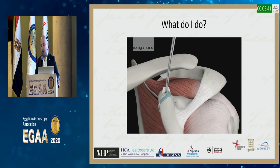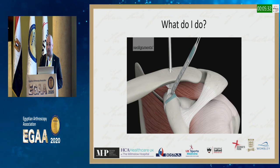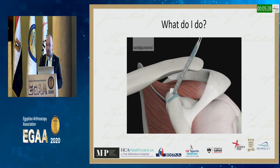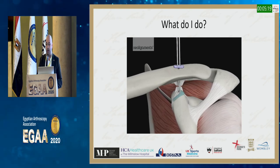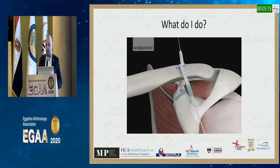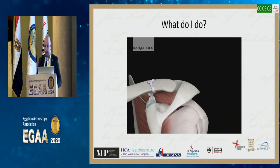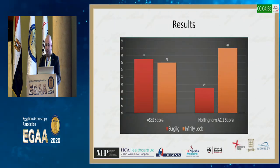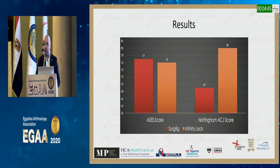After looping the ligament around the coracoid base, we push it firmly down to the base, reduce the clavicle — often holding with a K-wire — then pass a guide wire and drill a cortical tunnel. We pass the sutures back up and through, then tie over an endobutton on top with the clavicle reduced. We loop the posterior limb around to the front, tie another knot, and suture the two limbs down to avoid prominence — particularly important for thin cyclists. Compared with our prior SurgiLig group, we see significant improvement in the Nottingham ACJ score.